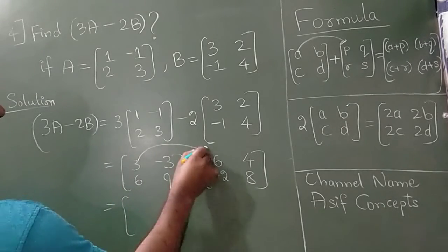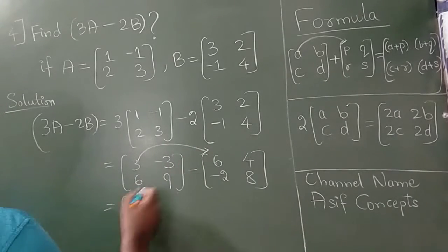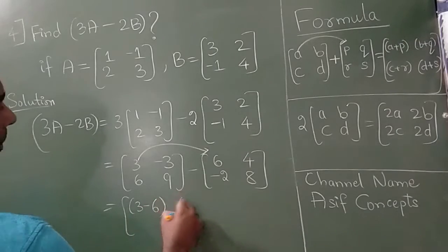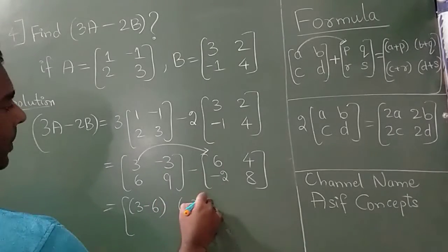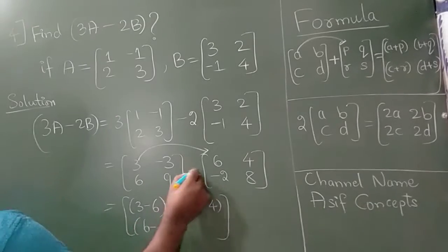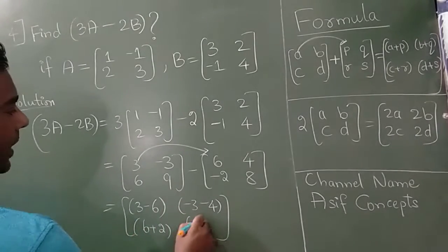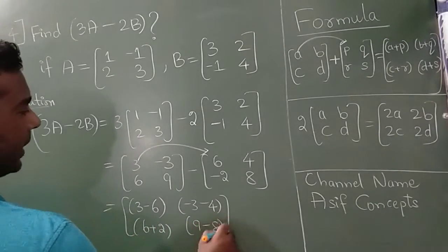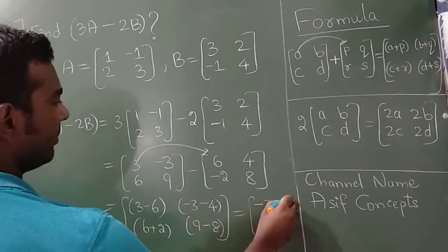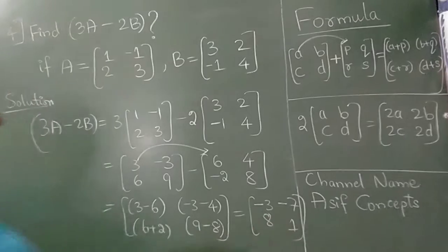Now from this, you need to subtract corresponding elements. 3 minus 6 is minus 3, 6 minus... minus 4, 6, minus into minus is plus, and 9 minus 8. So this will be minus 3, minus 7, 8, and 1.